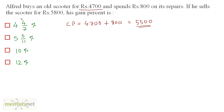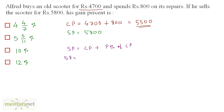He sells the scooter for 5800, so the selling price equals 5800. The cost price is increased by some percentage to get the selling price — that is, the person gains P percent profit. So selling price equals cost price plus P percent of cost price. Therefore 5800 equals 5500 plus P upon 100 times 5500.